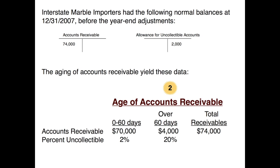Here's what an aging schedule looks like. You've probably seen one on a utility bill, where it shows your bill is zero to 30 days old, 30 to 61 days old, 61 to 90 days old, etc. Companies use that to determine whether they'll be able to collect from you. Here we have a simple aging schedule: $70,000 of accounts receivable are zero to 60 days old and $4,000 are over 60 days old — $74,000 total. The percent uncollectible for zero to 60 days is 2%, and over 60 days we expect not to collect 20%.